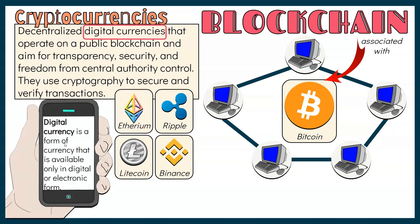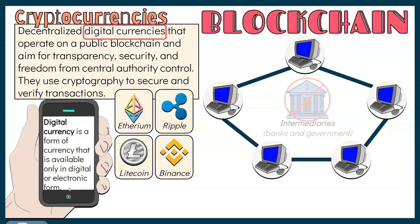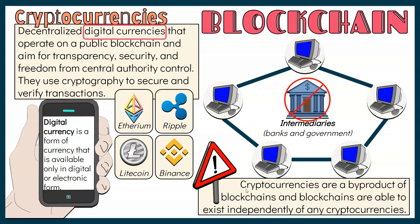The term digital currency refers to a form of currency that is available only in digital or electronic form. These currencies may not be used by all countries or communities. Cryptocurrencies eliminate the need for intermediaries like banks and governments. They allow direct peer-to-peer transactions, lending, and borrowing without the geographical or socioeconomic barriers present in conventional banking. However, it should be emphasized that cryptocurrencies are a byproduct of blockchains, and blockchains are able to exist independently of any cryptocurrencies.